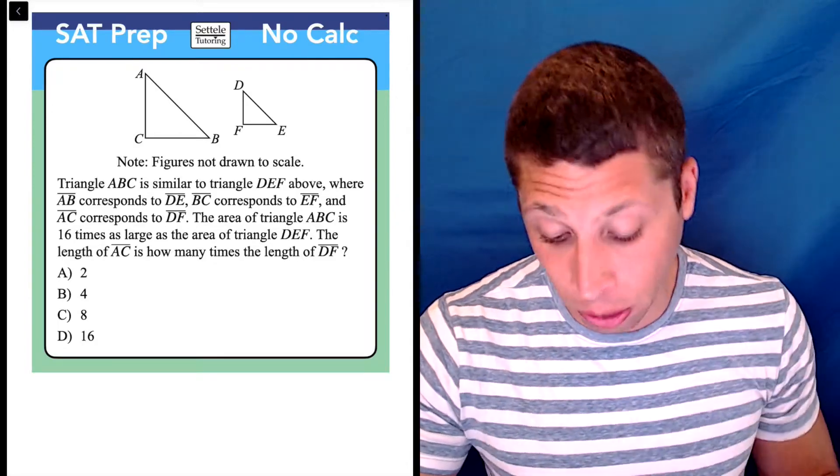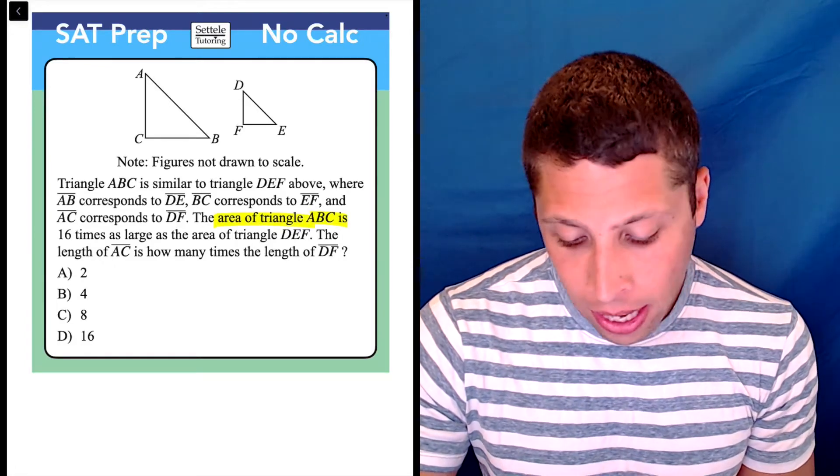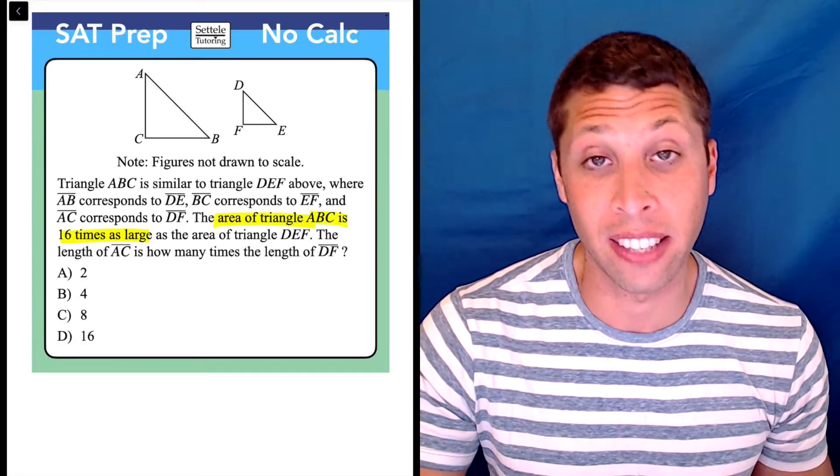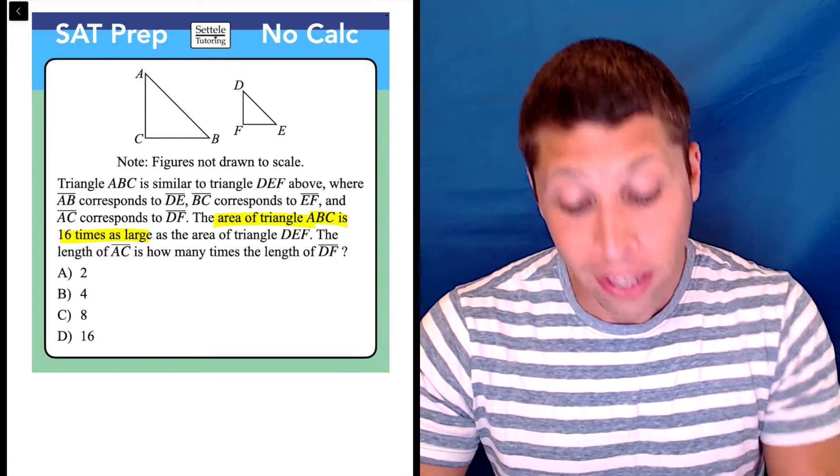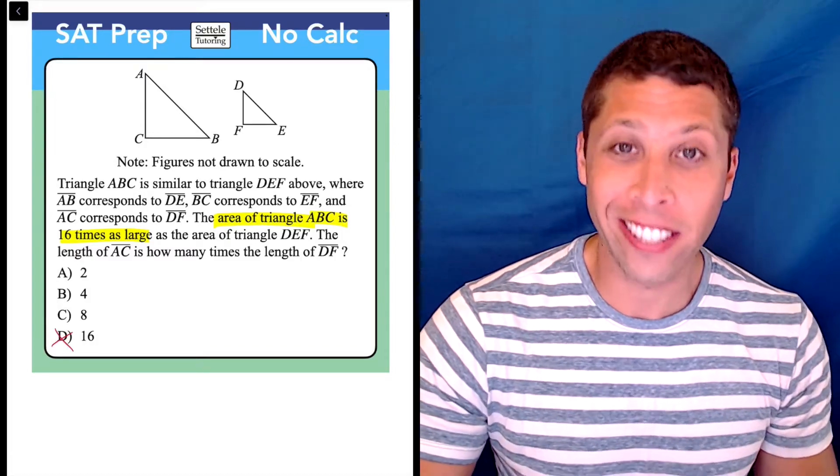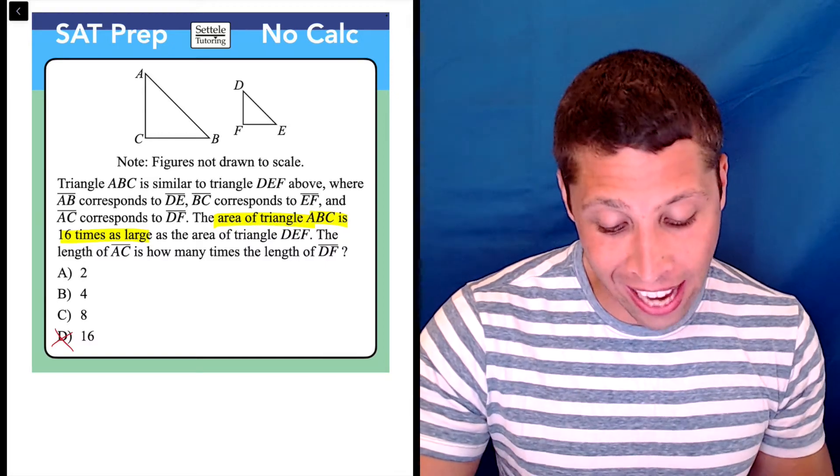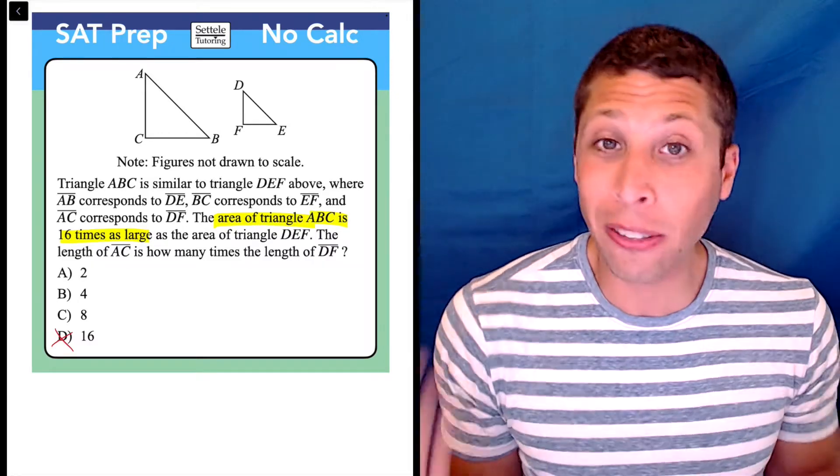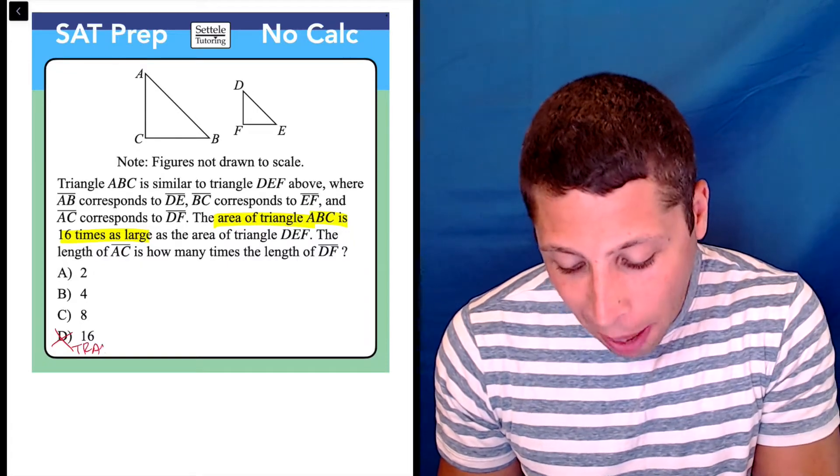The one piece of information that we really need is that the area of ABC is 16 times as large as the other triangle DEF. Now you should know from that, that choice D is not the answer. It's not going to be the case that side AC is 16 times DF. That's way too easy. This is definitely a trap answer.